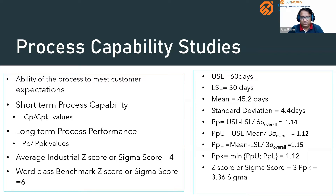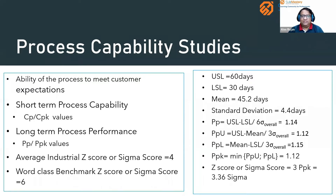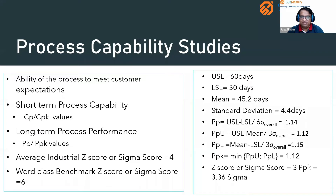For long-term process performance, the usual overall standard deviation calculation is used. The average industrial Z-score is four sigma, and world-class process performance is six sigma. We check whether our process meets the average industrial Z-score of four sigma. If it meets that benchmark, the process is capable; if not, the process is not capable.